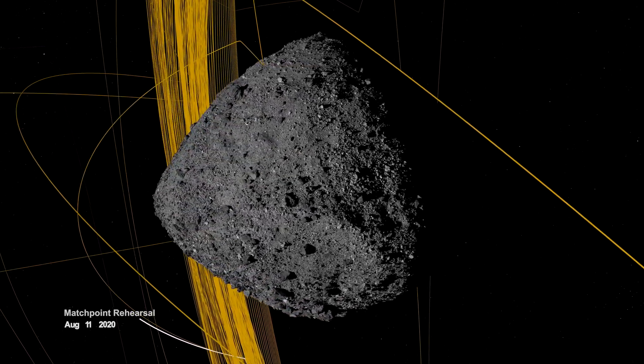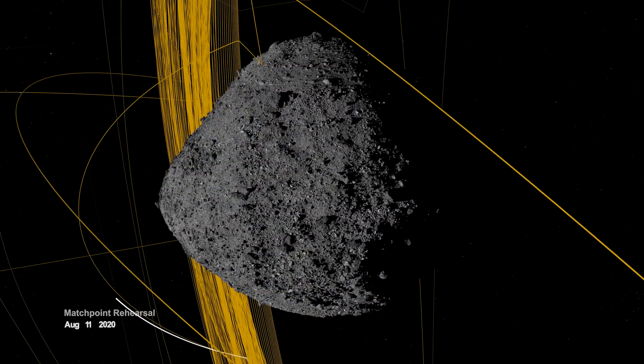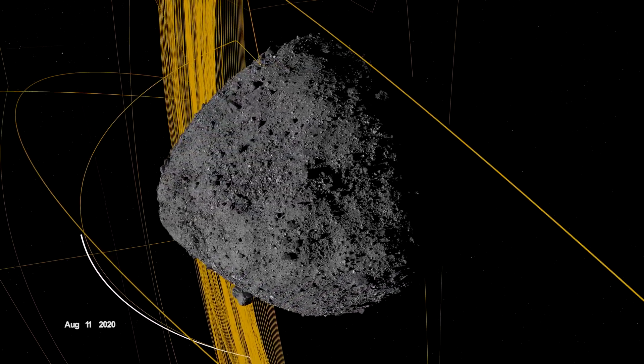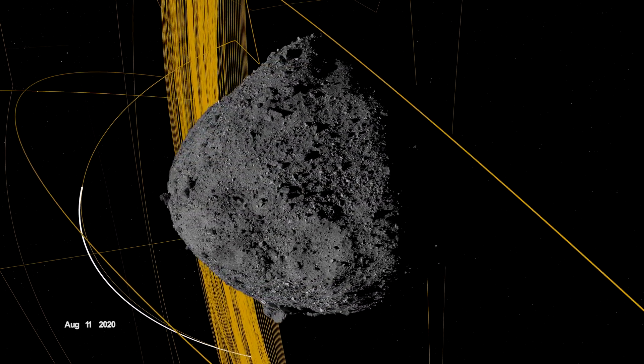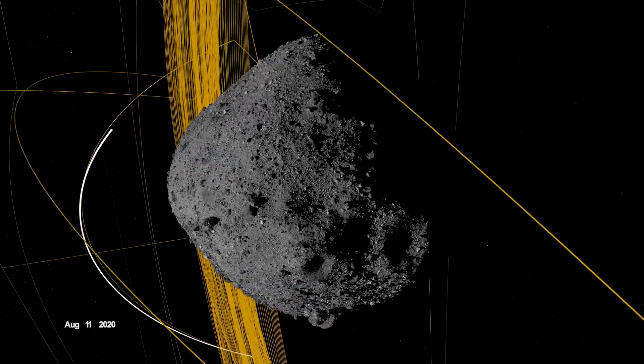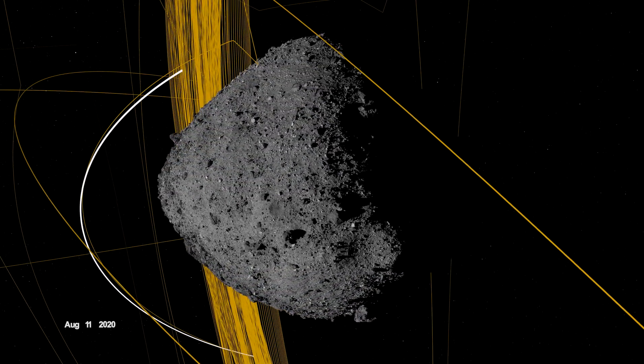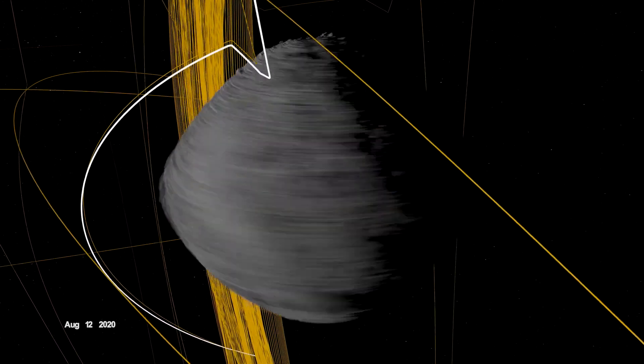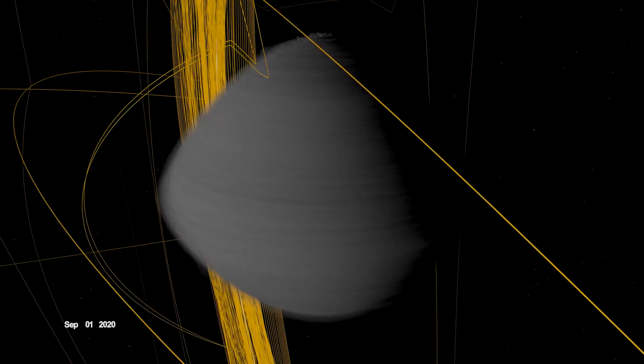On August 11th, OSIRIS-REx departed its home orbit and made a four-hour traverse to Bennu's northern hemisphere, retracing its earlier path. After performing the checkpoint engine burn to begin its descent, it made a second engine burn called Match Point to match Bennu's rotation before backing away at an altitude of approximately 40 meters.